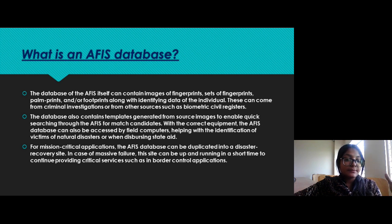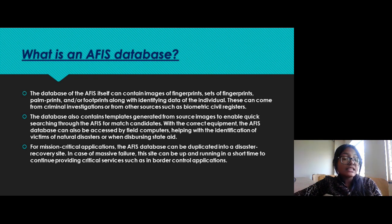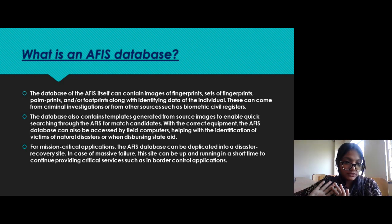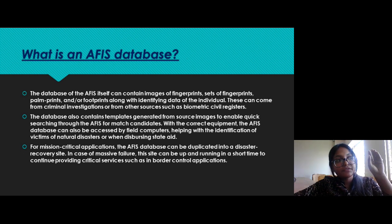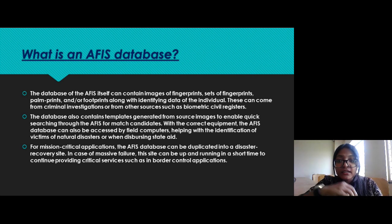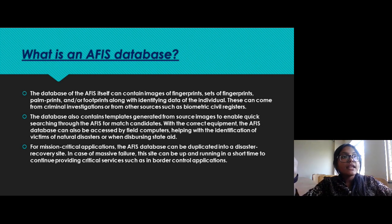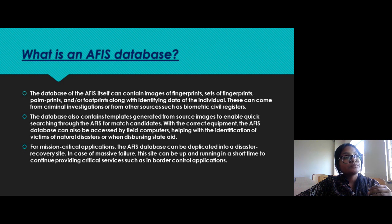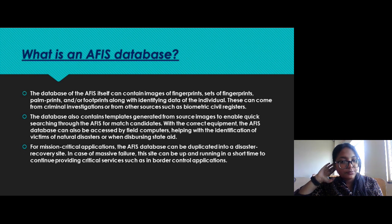The AFIS database itself can contain images of fingerprints, sets of fingerprints, palm prints, or footprints, along with identifying data of the individual from whom the sample was taken. Data can come from criminal investigations — such as from criminal case files — or from other sources such as biometric civil registers, which include every normal person's fingerprint.